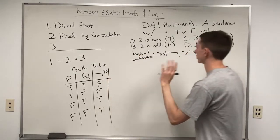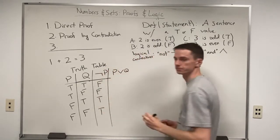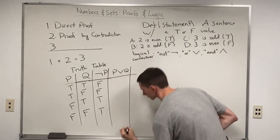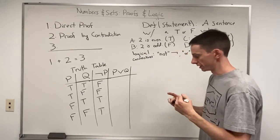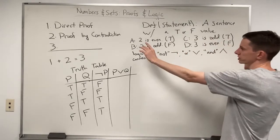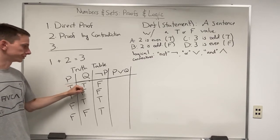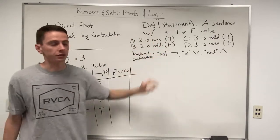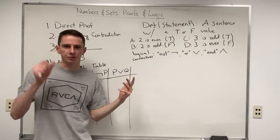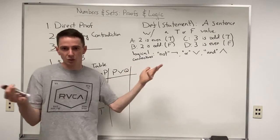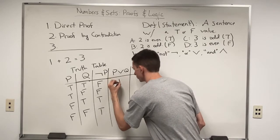Next, the OR logical connective: P∨Q. Let's start with the case where both P and Q are true. We can read that as 'two is even or three is odd.' Both are true, so definitely at least one of them is true — the result is true. So true OR true produces a resulting true statement.